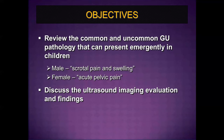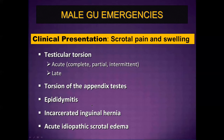During the next 30 minutes, we'll review the common and uncommon GU pathology that can present emergently in children. In males, the common presentation is scrotal pain and swelling, and in females, acute pelvic pain. We'll discuss the ultrasound imaging evaluation and findings of the entities that can present this way. We'll start with the male GU emergencies. The common entities causing scrotal pain and swelling are testicular torsion, torsion of the appendix testis, epididymitis, incarcerated inguinal hernia, and acute idiopathic scrotal edema.